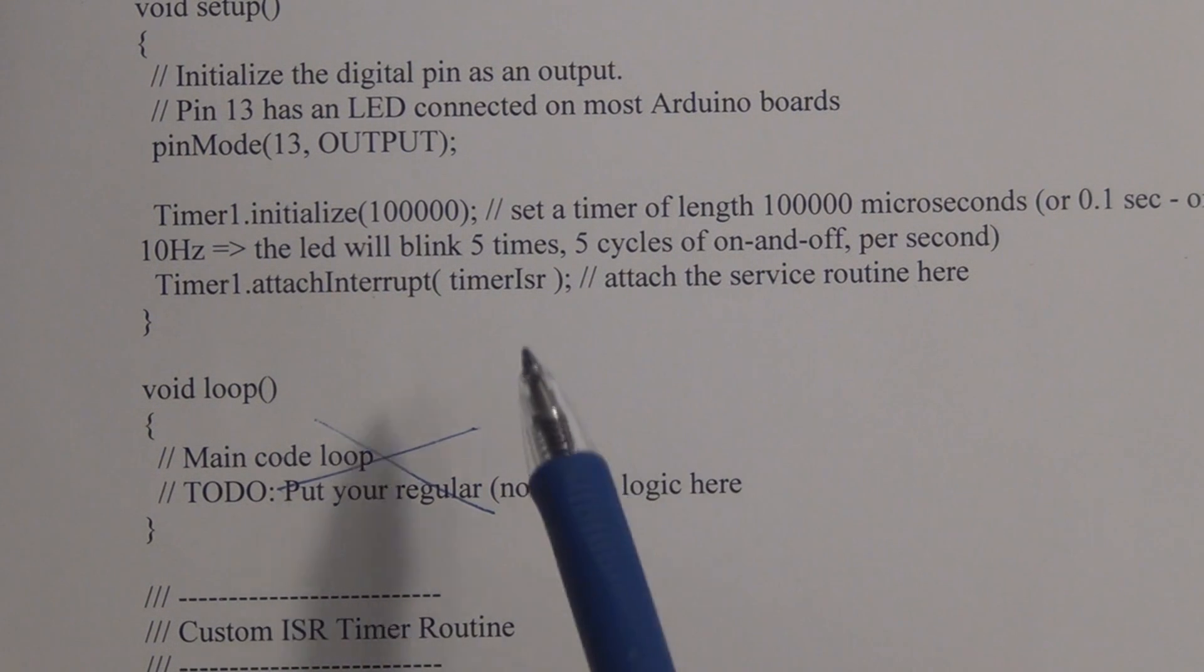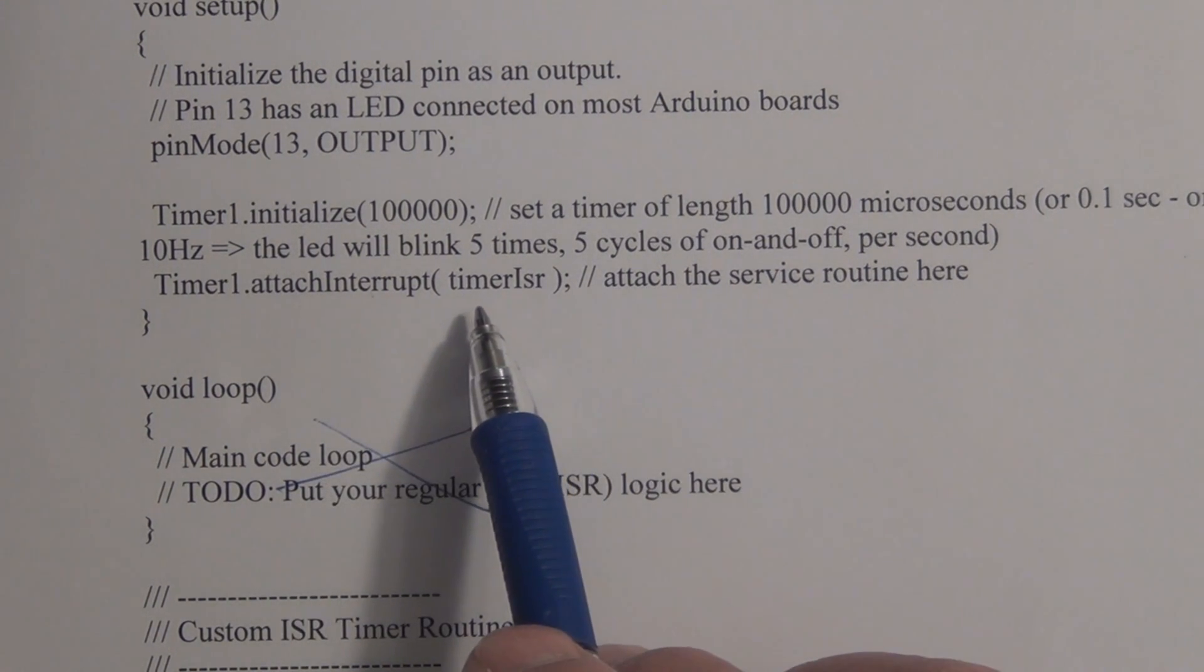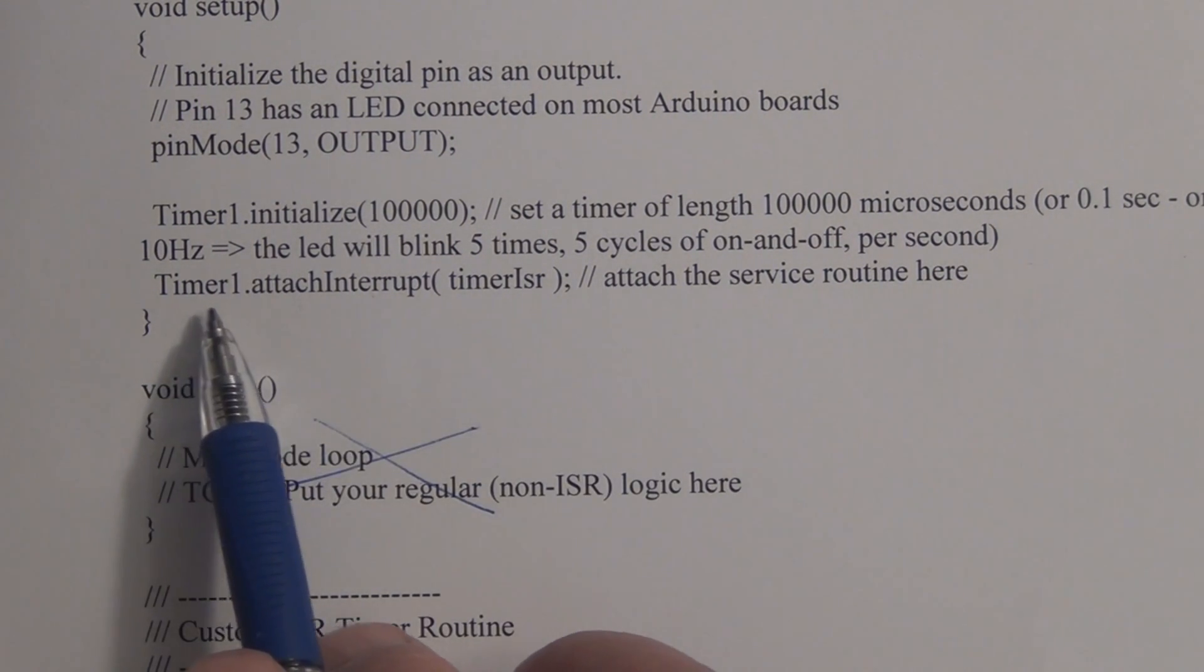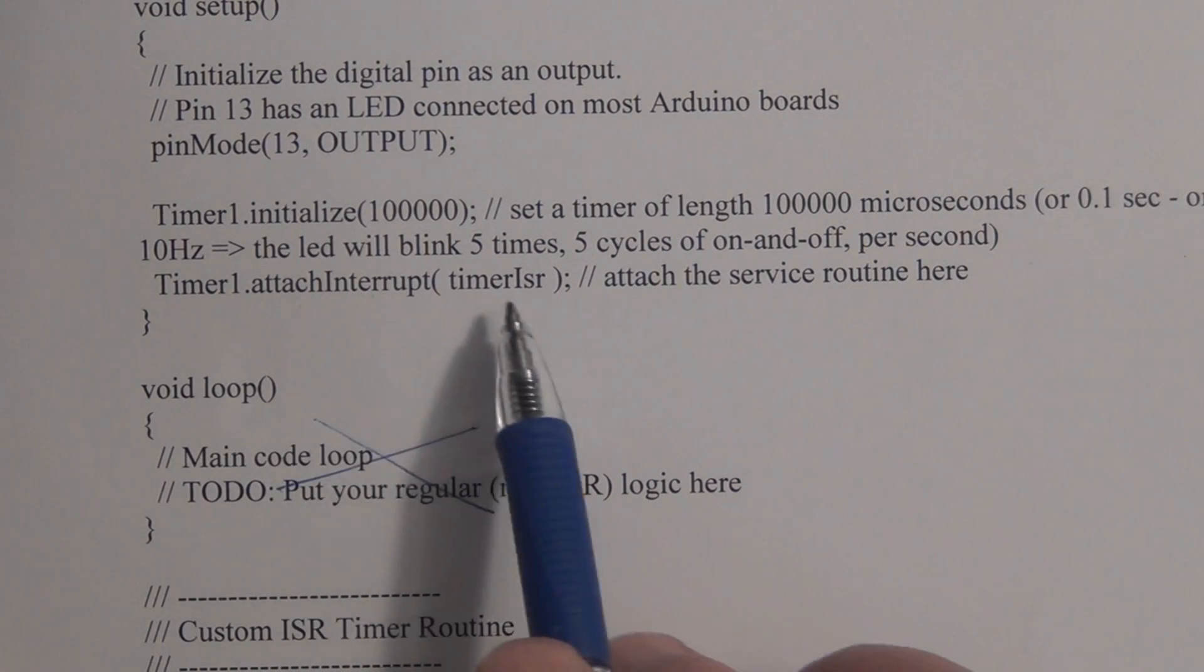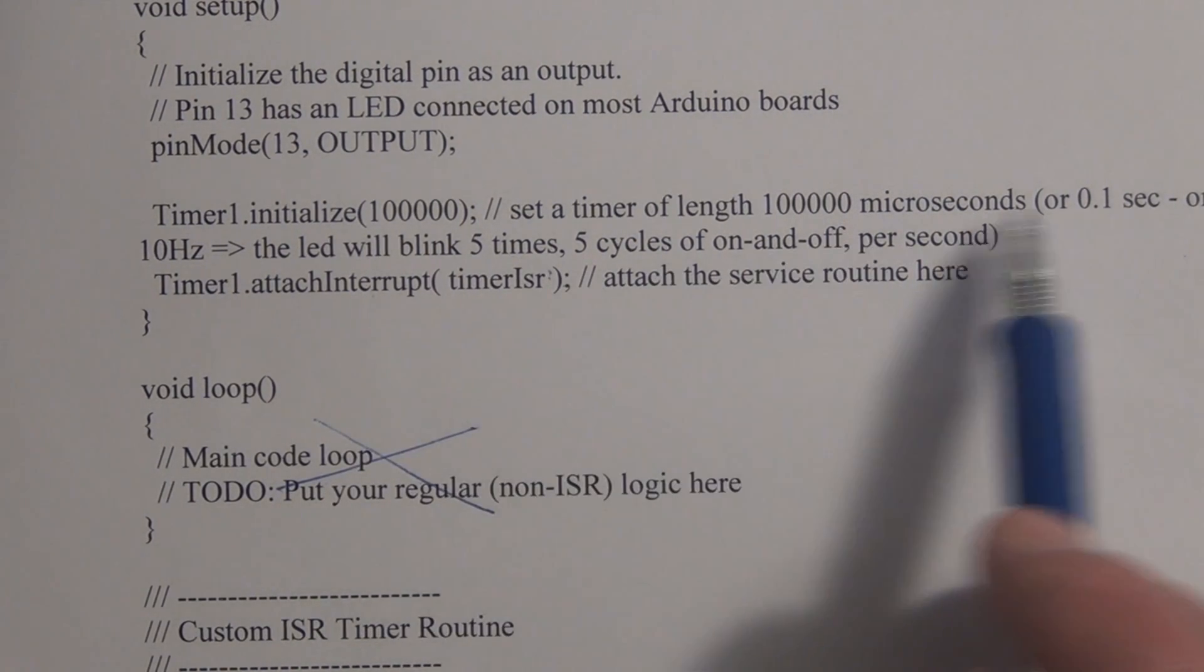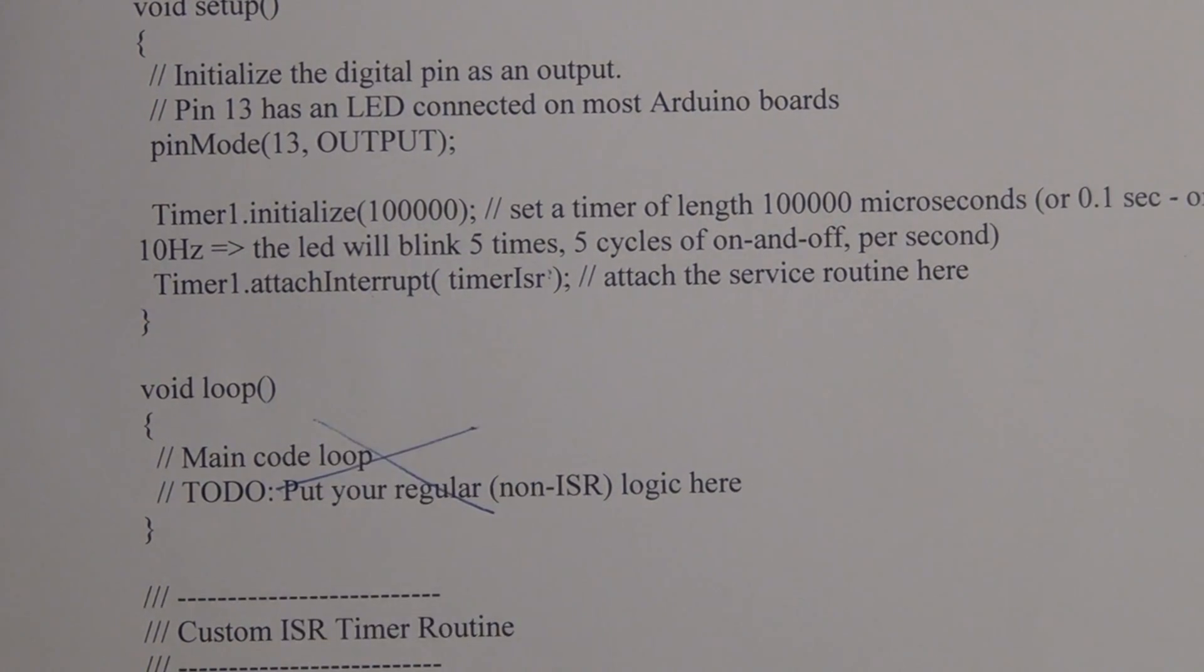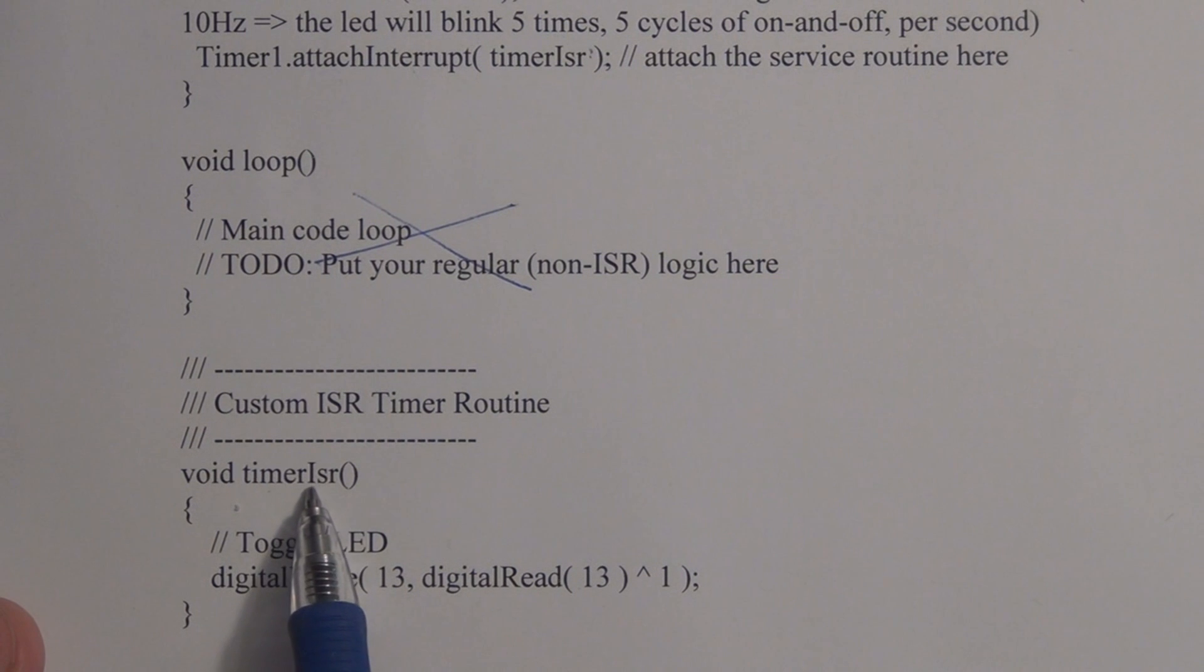Unlike a hardware interrupt where we have to specify the interrupt, the pin that we're looking at, what function we want to run, and whether we're looking at the rising or falling edge, this timer interrupt just has this function here that gets called every 0.1 seconds. Down here we have void timer ISR, and this is how we toggle that LED, where we're going to write to it. That LED is attached to pin 13.